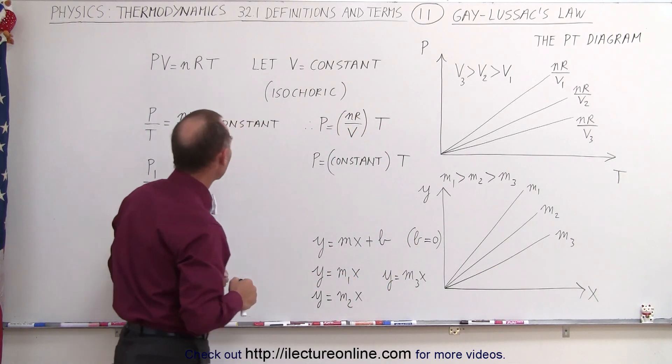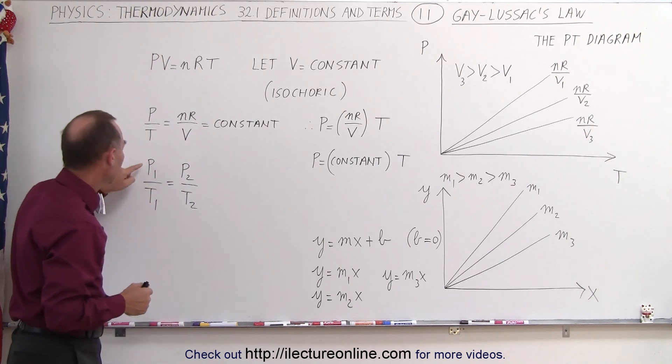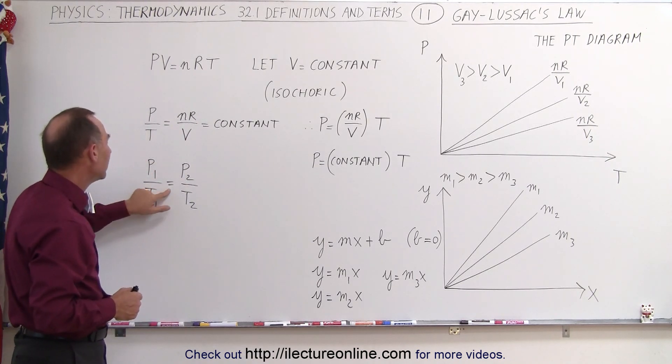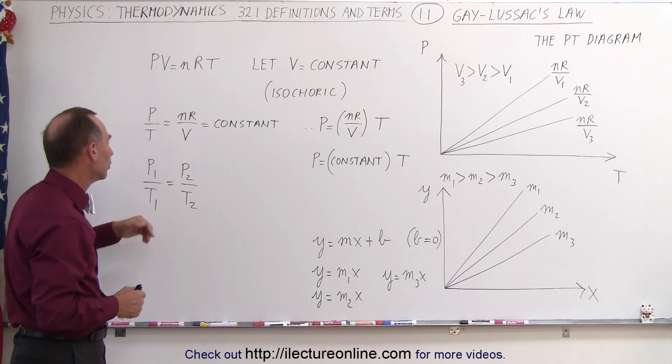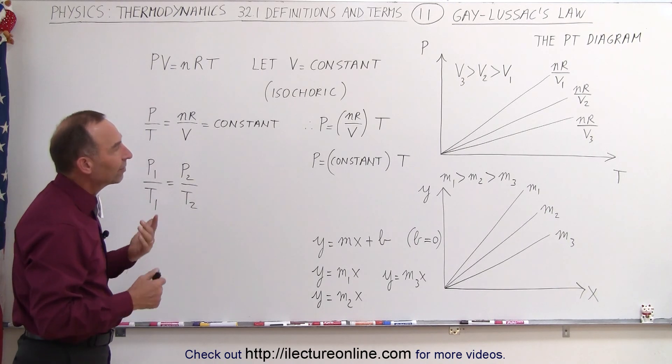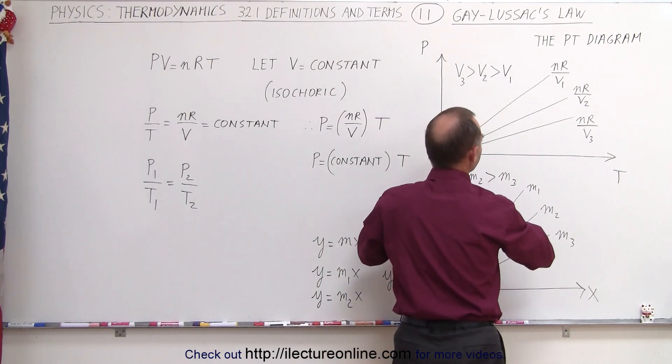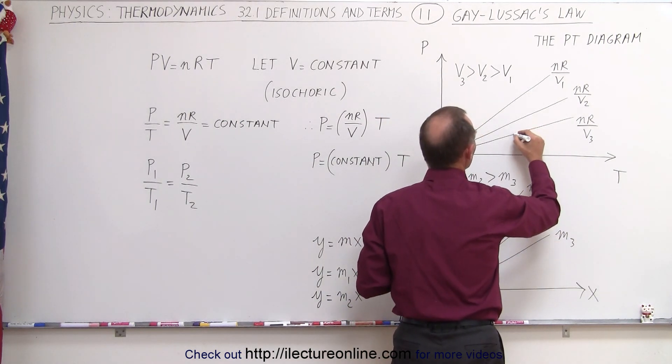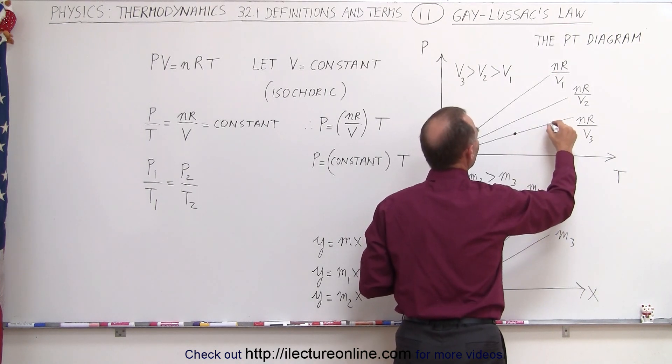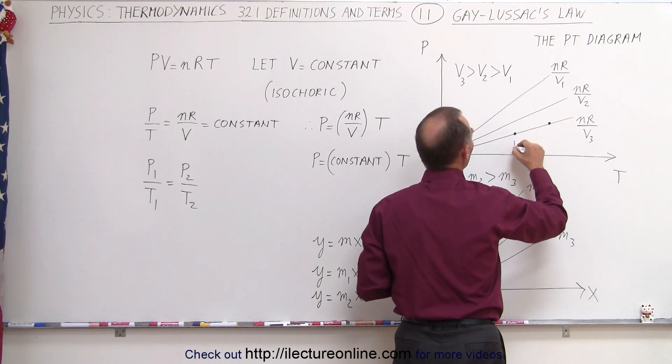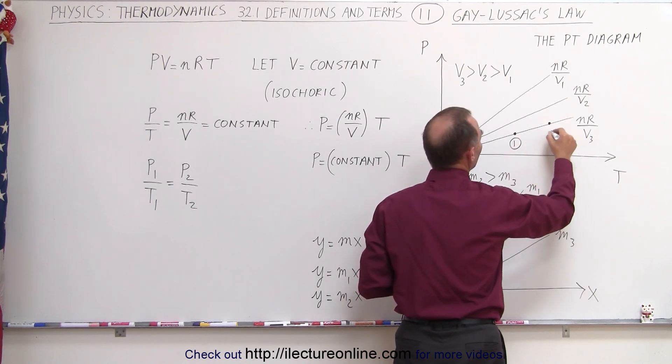And so we can then take a look here and see that the ratio of P1 to T1 is going to equal the ratio of P2 to T2. Does that make sense? And the answer is yes. So we can go to one particular state right here. So for a particular volume, since the volume remains constant, we can have a state here, we can have a state there. Notice, let's call this state 1, let's call this state 2.